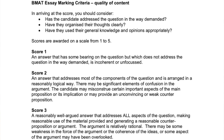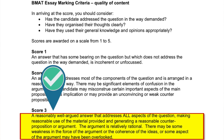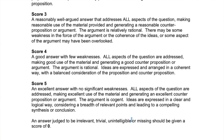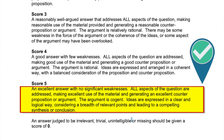Looking at what the mark scheme specifically says candidates must do to achieve a 5: the mark scheme clearly states that candidates need to provide and generate a reasonable counter-proposition or argument in order to score 3 out of 5. Failing to provide at least one counter-argument will restrict your ability to score 3 or more. You also need to reach a conclusion. A great essay, in the words of the marking criteria for a score of 5, leads to a compelling synthesis or conclusion.